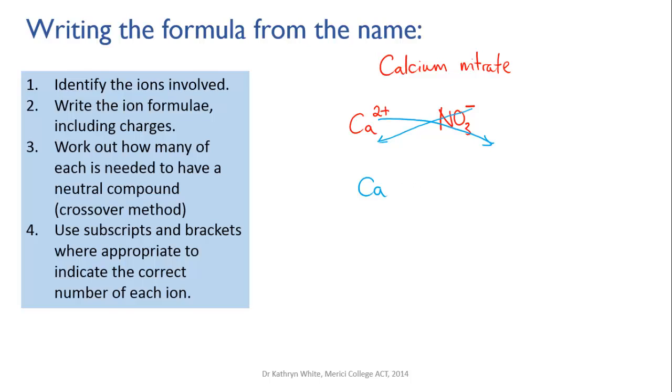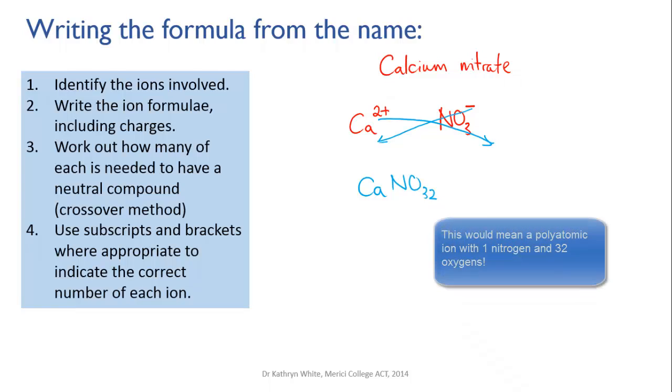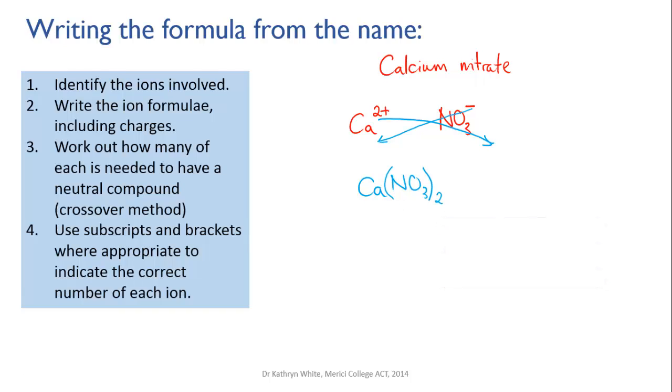If we do the crossover method for this the two is going to come down near the nitrate. The one is going to come down near the calcium which is going to give us a formula of one calcium and two nitrates. Now we can't just write NO3 2 like this. This makes no sense at all. What we need to indicate is that we need two whole nitrate ions and the way we do that is to put them in brackets and to put a little 2 outside which means two lots of everything that's inside the bracket. So that's our formula for calcium nitrate.